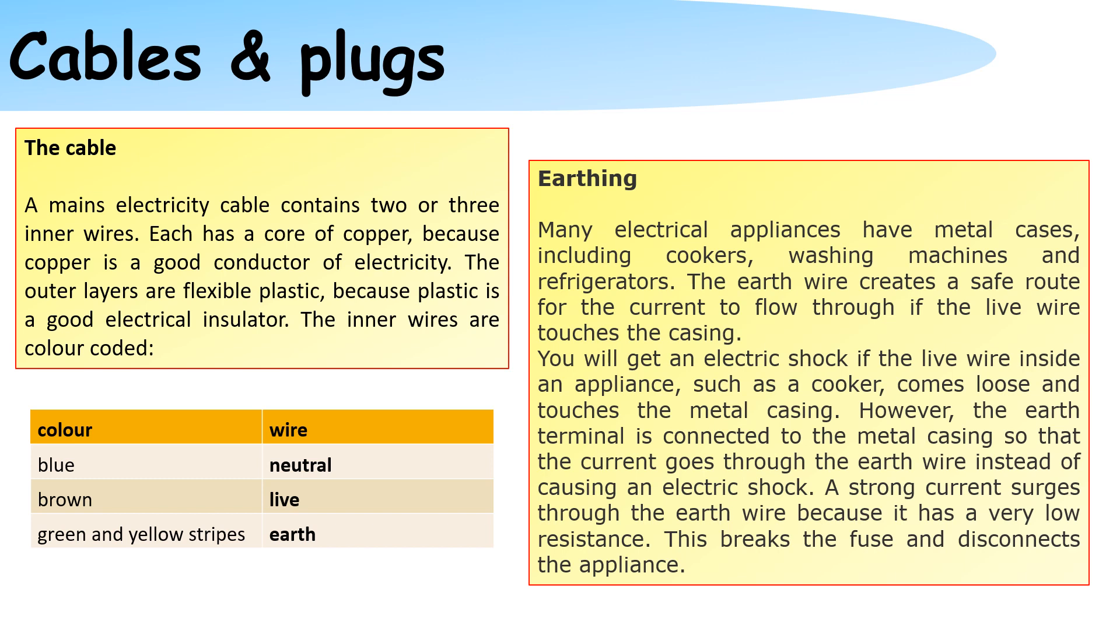Many electrical appliances have metal cases including cookers, washing machines and refrigerators. The earth wire creates a safe route for the current to flow to if there is a short circuit.